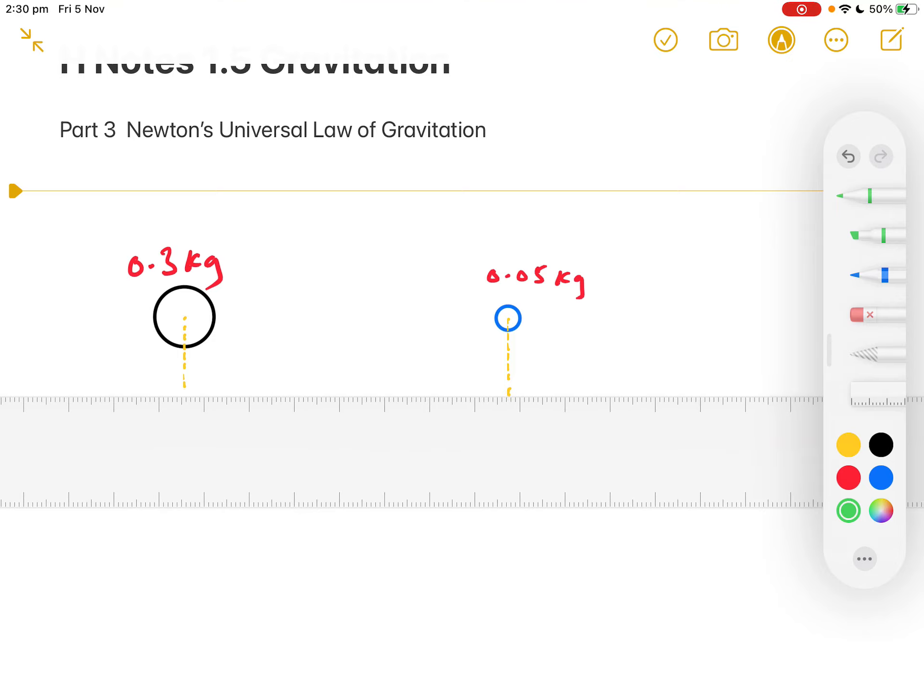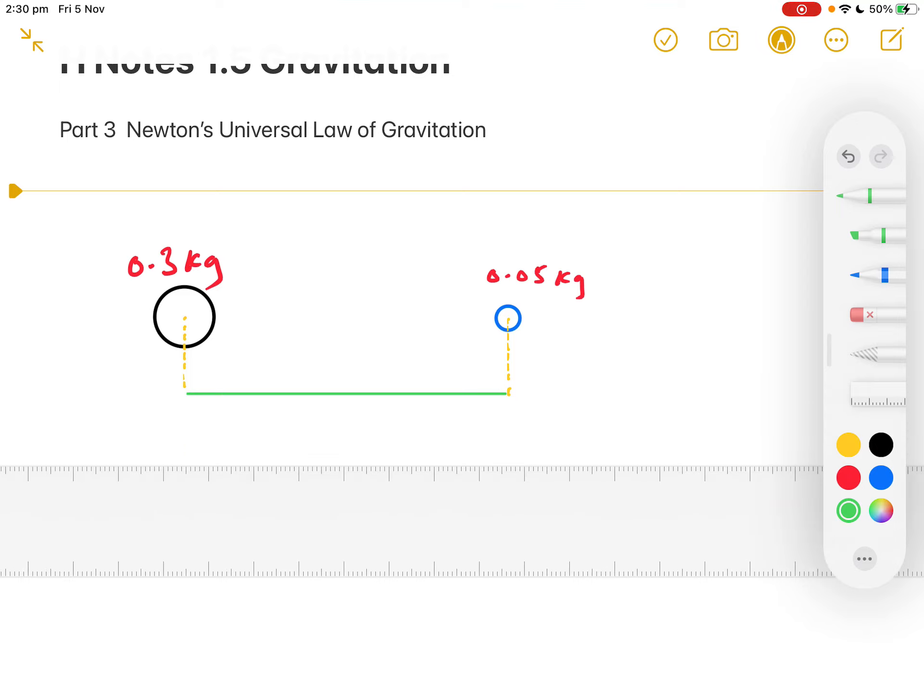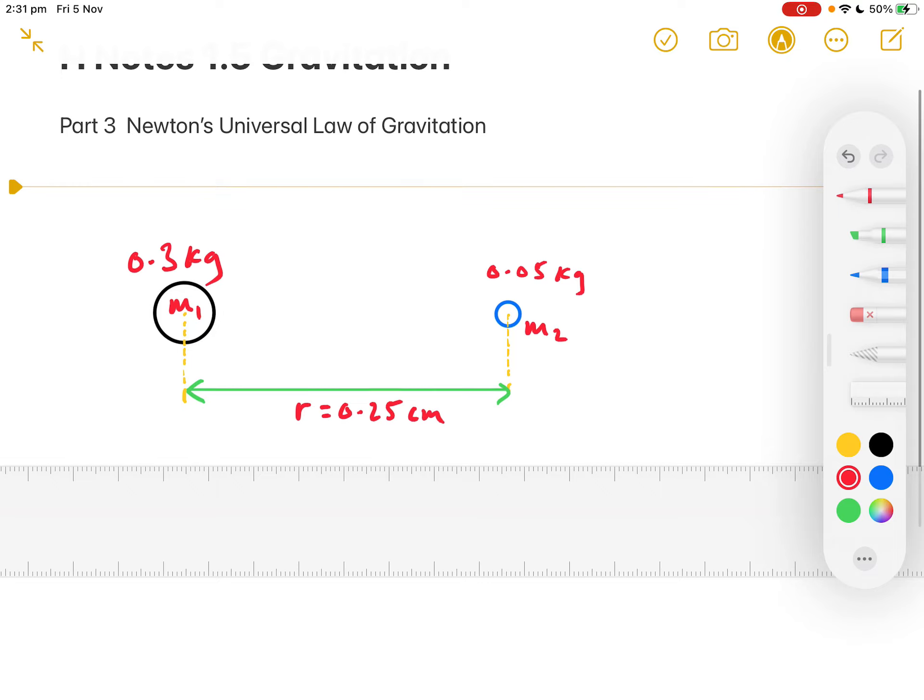So, the separation distance of these two would be this and we'll call that separation distance R, and let's make R be 25 centimetres in this case. Let's call this mass M1 and let's call the second mass M2.